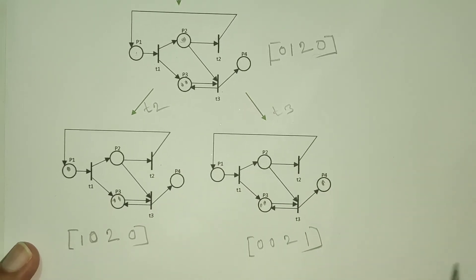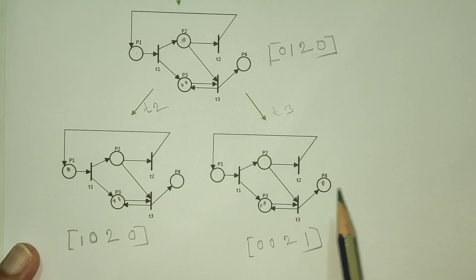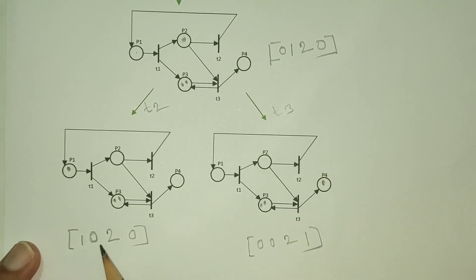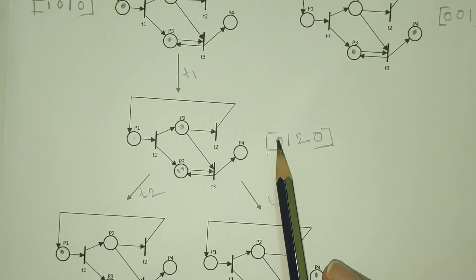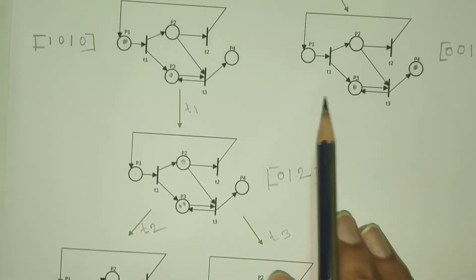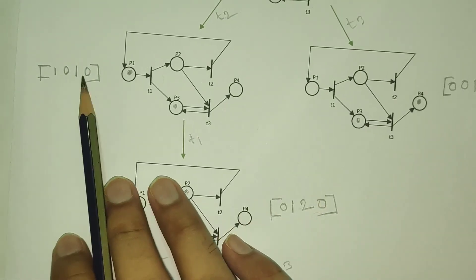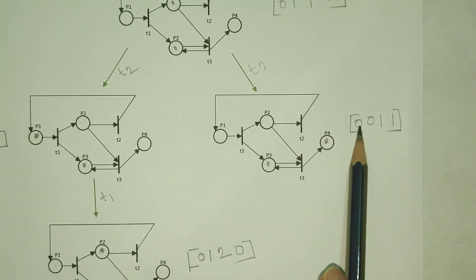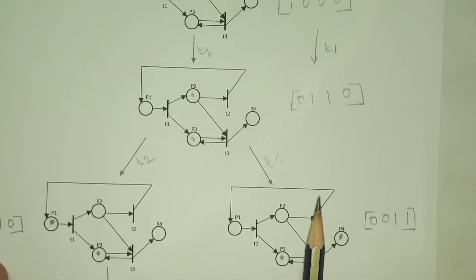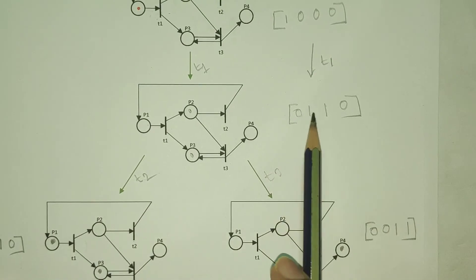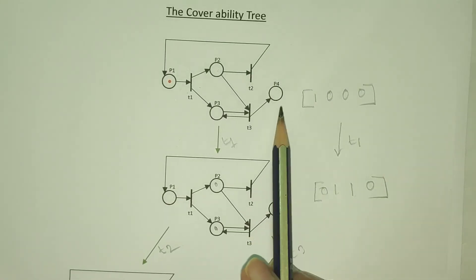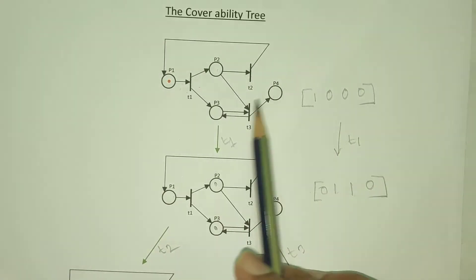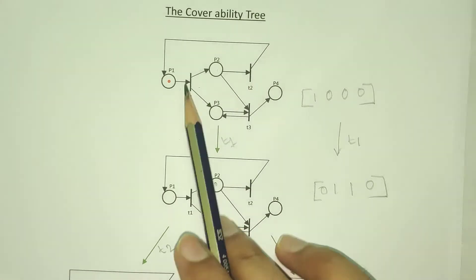What we want to see is: 0 will be 0, 1, 1, 0 — and the resulting sequence is 0, 1, 0, 1, 0, 1, 0, 1, 0. This is the first time we have to press this — this is the coverability tree.